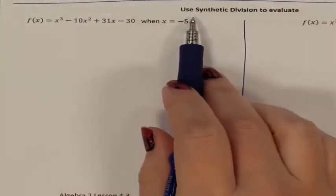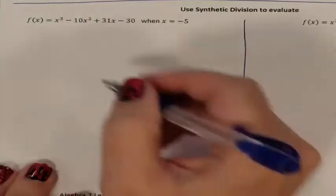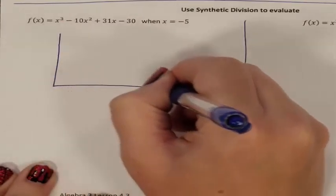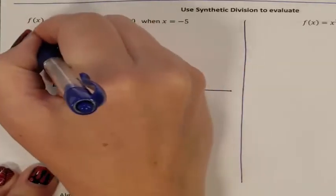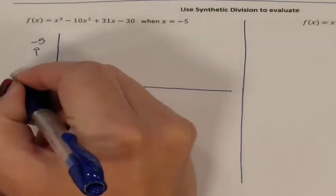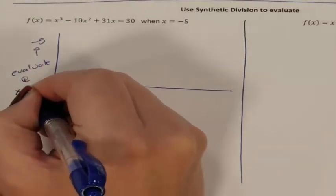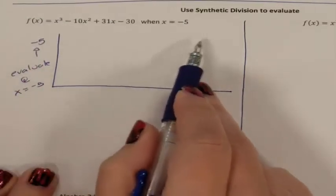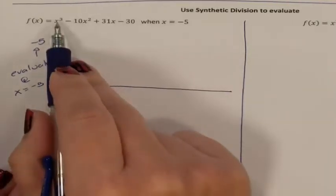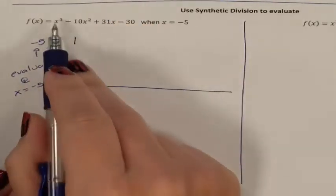Our next problem, we are asked to evaluate using synthetic division. So here is my synthetic division box. They are telling us to evaluate at negative 5. So this is what I'm evaluating at. I need to make sure all the coefficients are represented for all the exponents. So my highest exponent is a 3. His coefficient was a 1.